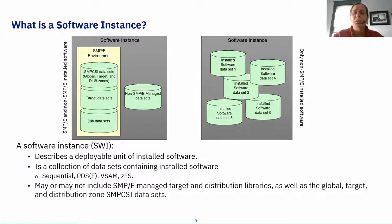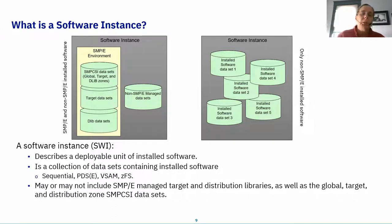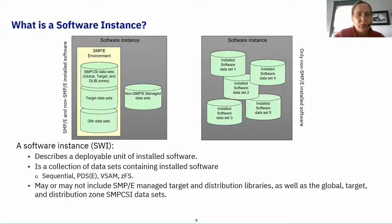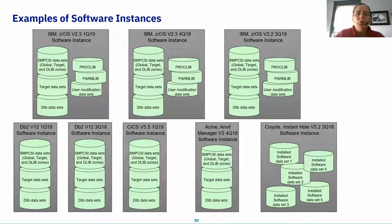On the right side of the chart, a Software Instance can simply be a collection of datasets that you point to and give a name. Both are perfectly valid. A Software Instance is the most basic unit — the deployable unit used within the installation strategy. The datasets can be sequential, PDS, PDSE, VSAM, ZFS, or even HFS. If you can find them and name them, you can put them in a Software Instance.